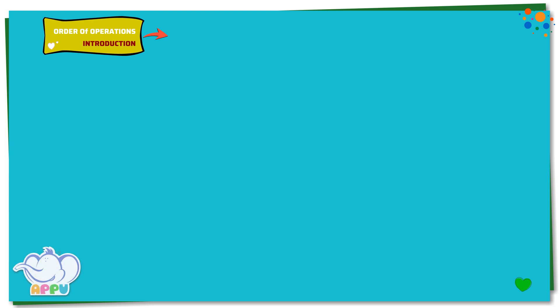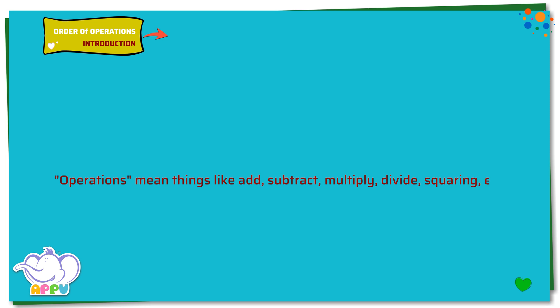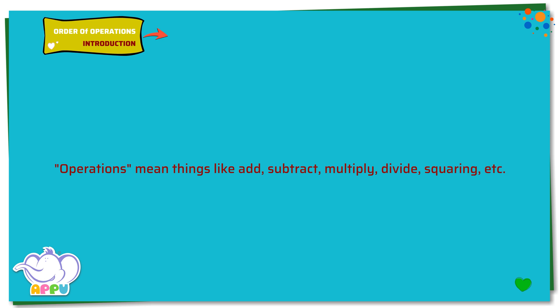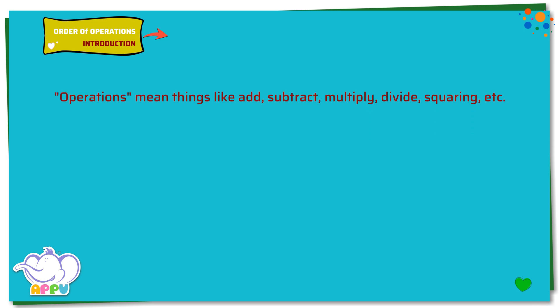Order of Operations. Introduction: Operations mean things like add, subtract, multiply, divide, squaring, etc. When you see something like 5 times 2 plus 3, there are two ways to solve this.